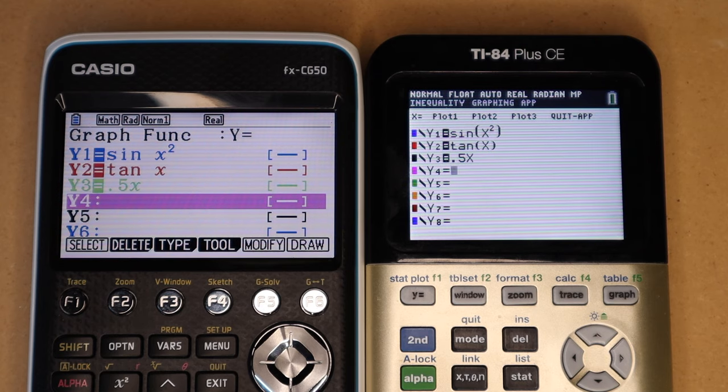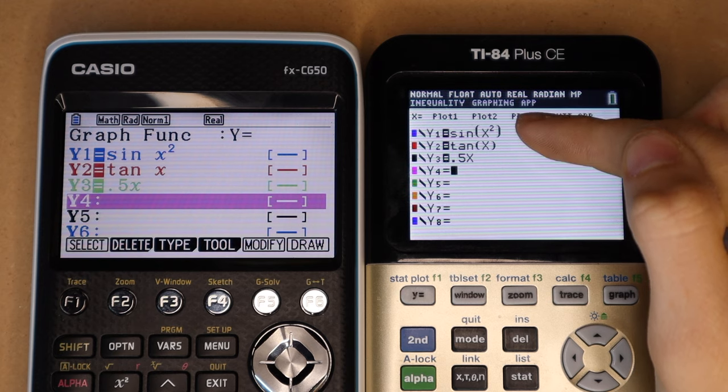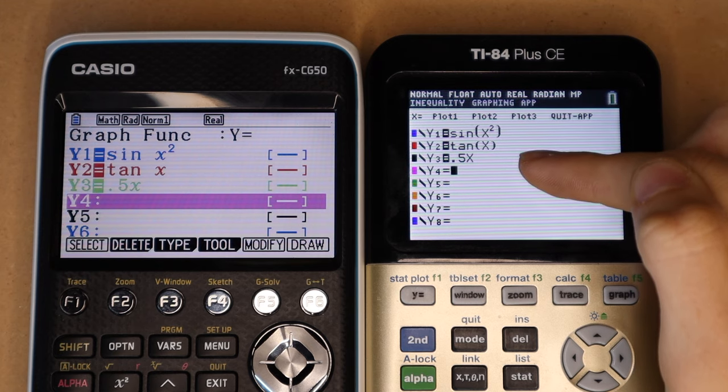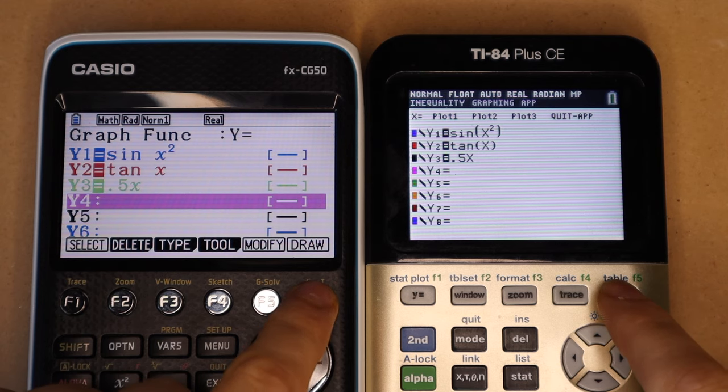Okay, next I'm going to do a graphing speed test. Here I have the three functions sine of X squared, tangent of X, and 0.5X. And I'm going to press Graph at the same time on both calculators right now.